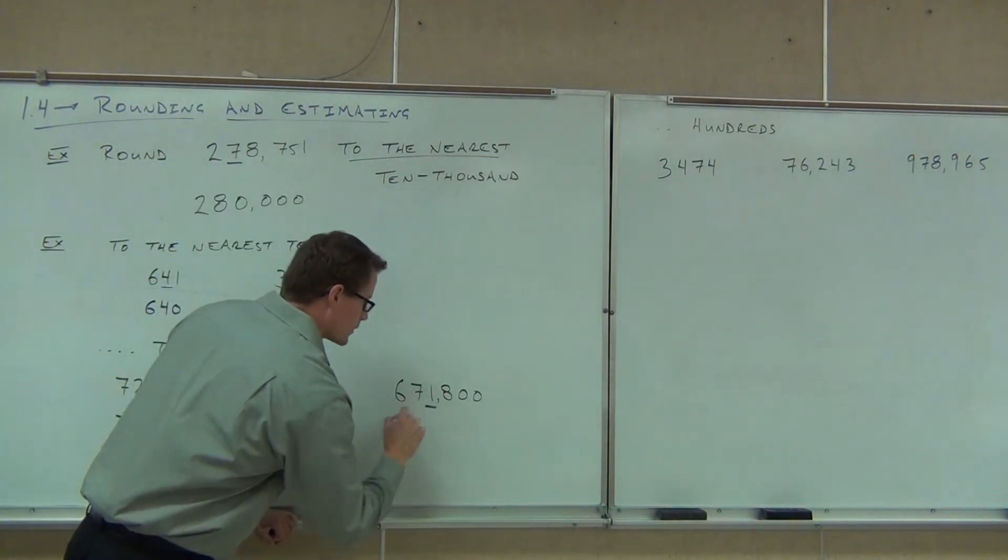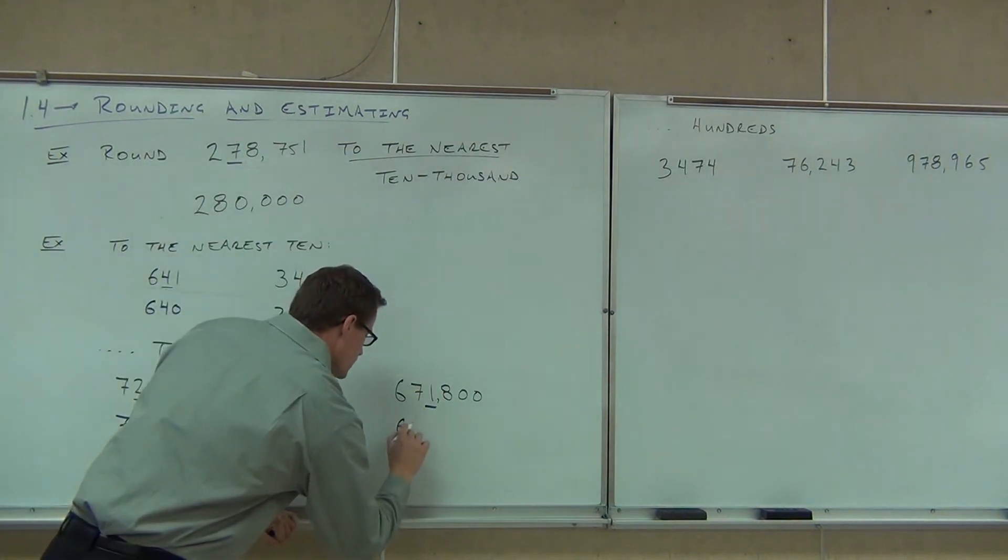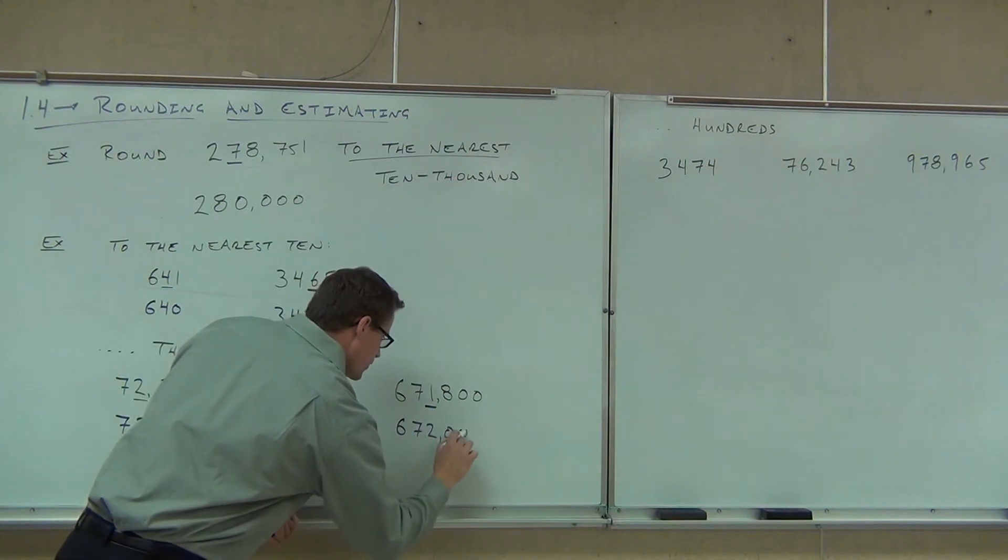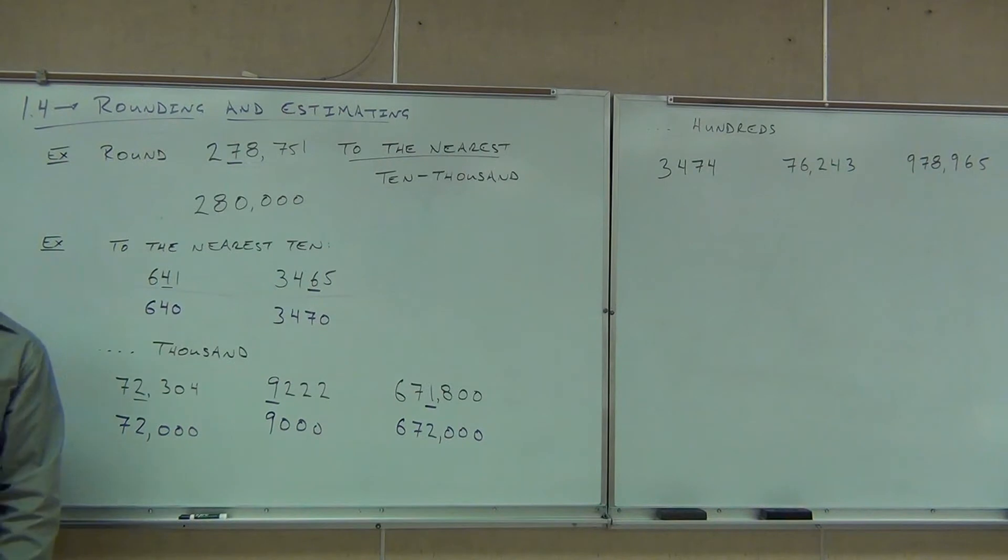Last one, we're looking at the one here, that's our place value. The eight says you're going to move that one up a notch, one digit, 6, 7, 2, follow the zeros. How many were three for three on that? Good deal. Awesome.